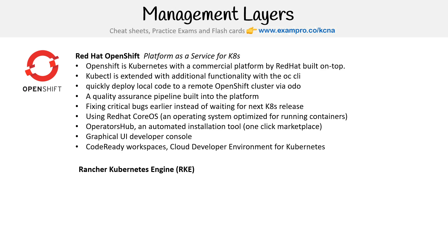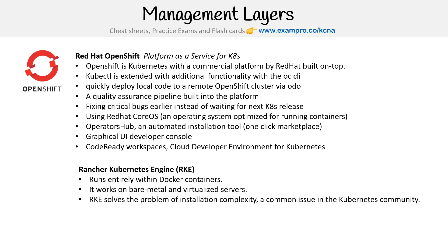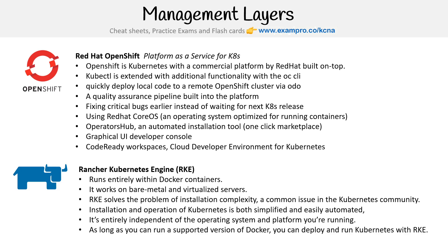Then we have Rancher Kubernetes Engine, RKE. It runs entirely within Docker containers, works on bare metal and virtualized servers, and solves the problem of installation complexity — a common issue in the Kubernetes community. Installation and operation are simplified and easily automated. It's entirely independent of the operating system and platform you're running — as long as you can run a supported version of Docker, you can deploy Kubernetes with RKE. So you can bring RKE anywhere: want to run on AWS? Just make sure you have a VM that runs Docker. Those are the two big ones.